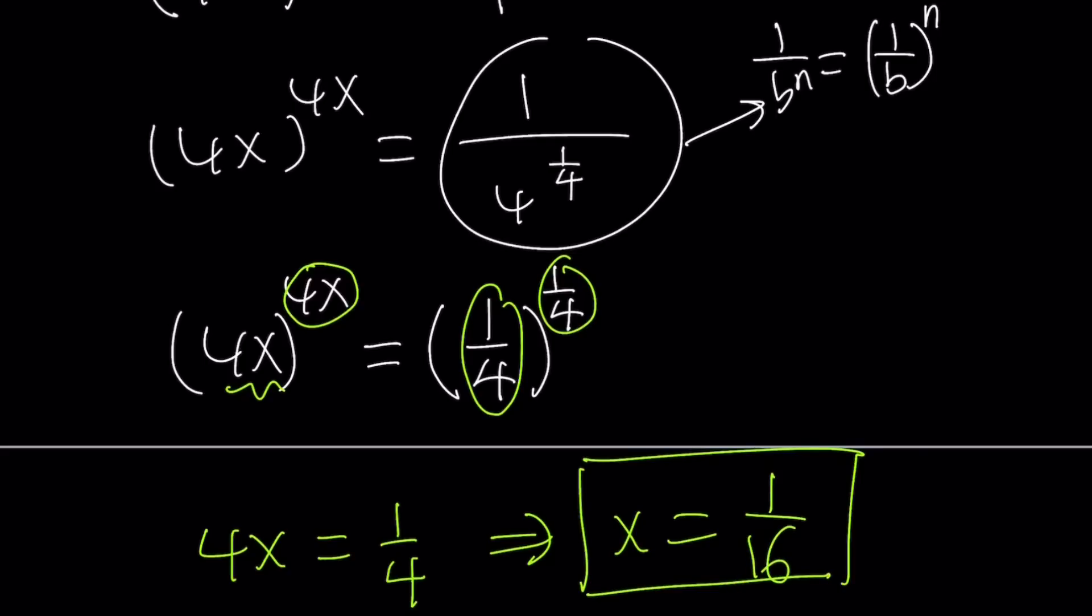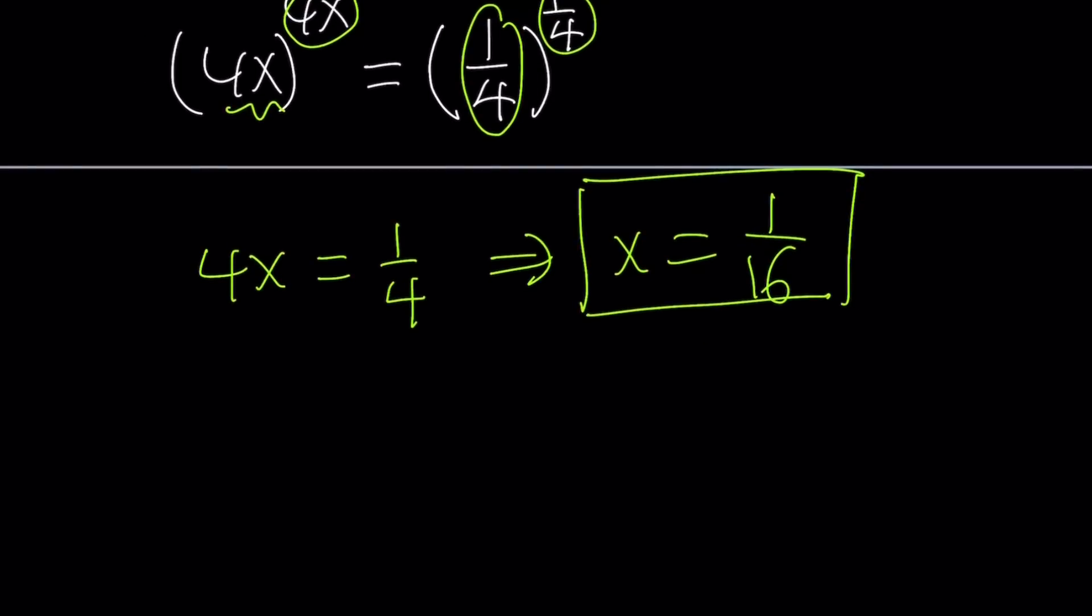This brings us to the end of, wait a minute, this is not the end of the video, because we got another solution. Wait a minute, how do you know that? Here is how. 1 over 4 to the power 1 over 4 is a very interesting number, because 1 over 4 is 1 half squared. So what is so interesting about it? Well, take a look.